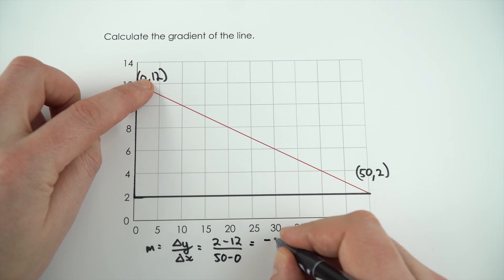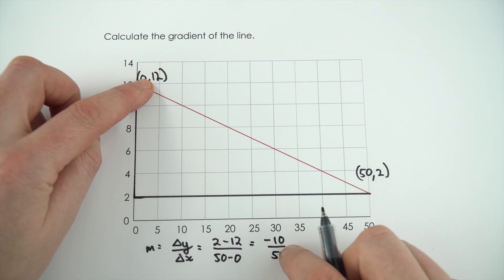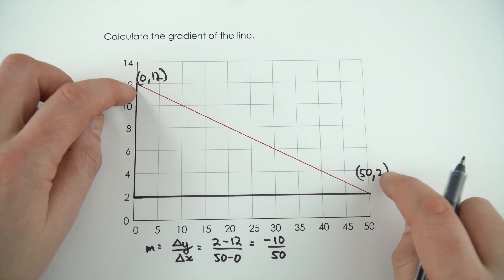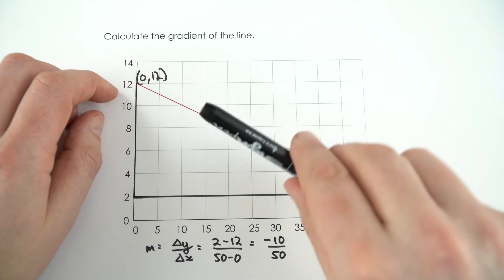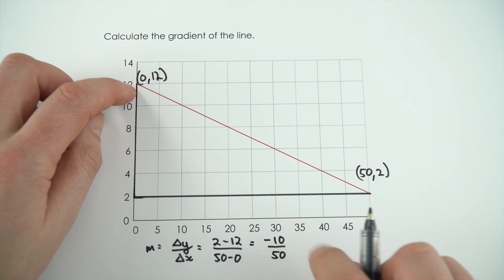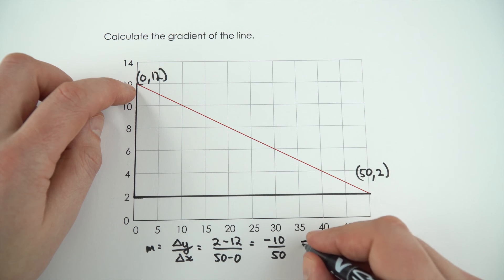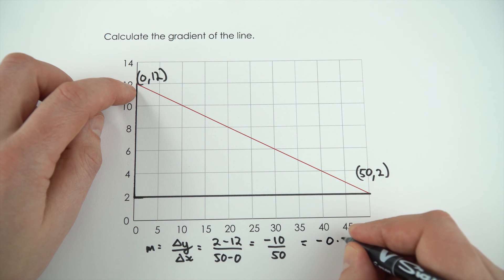And we can see here that's then equal to minus 10 over 50. So the calculation is pretty straightforward, but it's always worth checking, especially if the line goes down like this, that it's a negative gradient, so you should have a negative answer. And minus 10 over 50 is equal to minus 0.2.